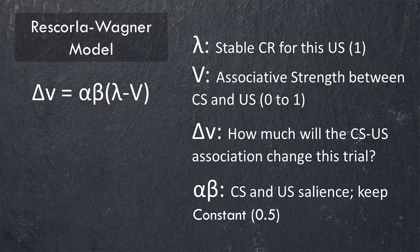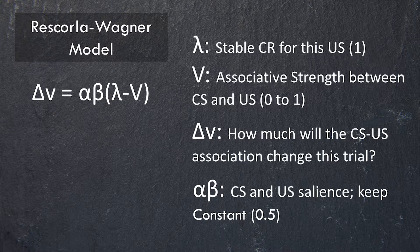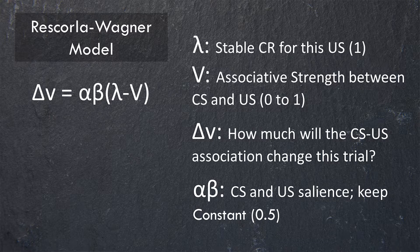So let's unpack some of the pieces of this formula. We have: delta V equals alpha times beta times (lambda minus V). Let's start with lambda. Lambda is the maximum stable conditioned response that you could get in this situation — it sets the boundaries of what you could possibly learn. For example, if you feed a rat five pellets, it might be willing to press a lever 20 times to get those five pellets. To keep it really simple, we can say the max we could learn is 100%, so we assign lambda a value of one.